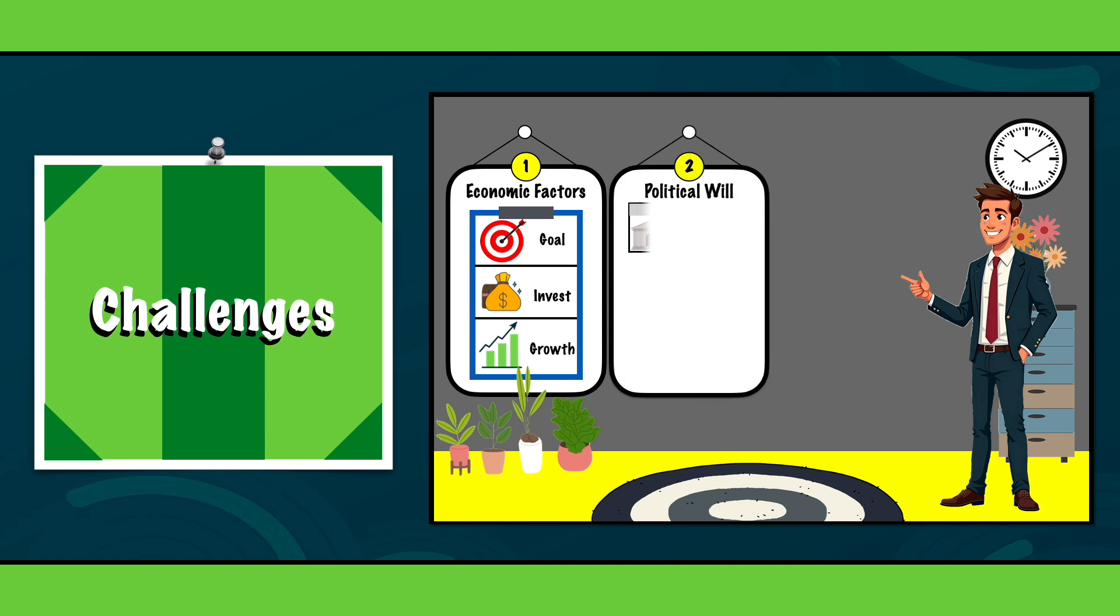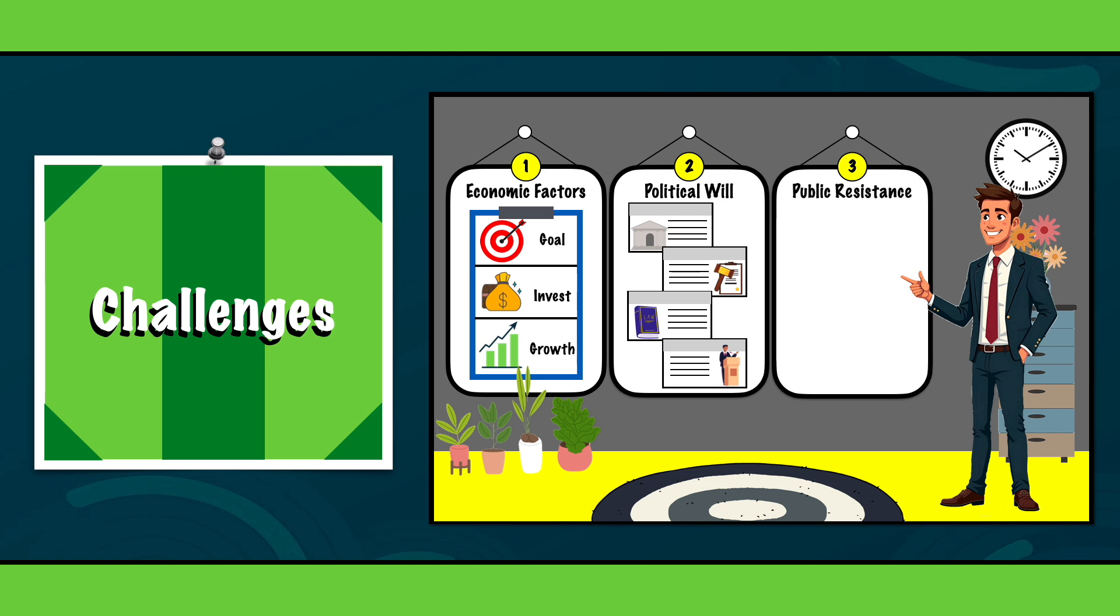Political will. Governments may lack the motivation or resources to enforce stricter environmental policies. Public resistance. People are sometimes reluctant to change their habits, especially if they don't see the immediate impact of their actions.